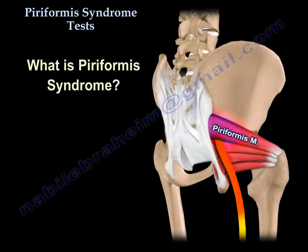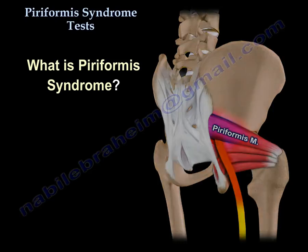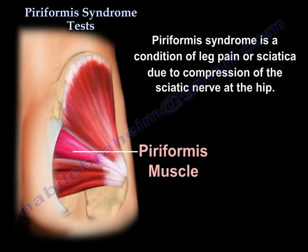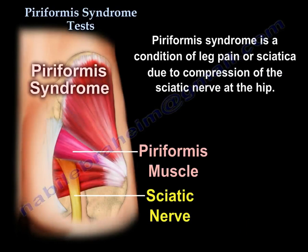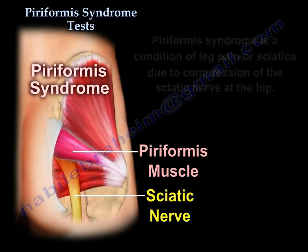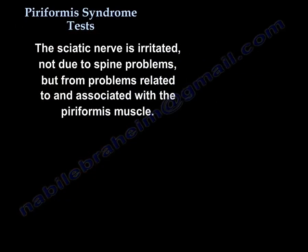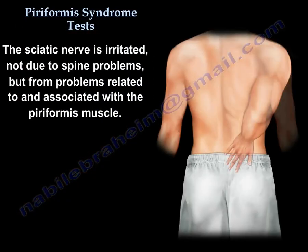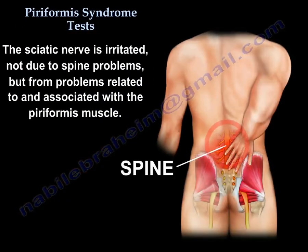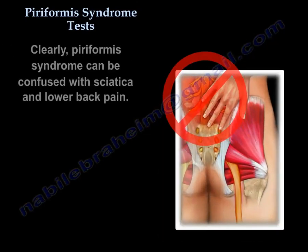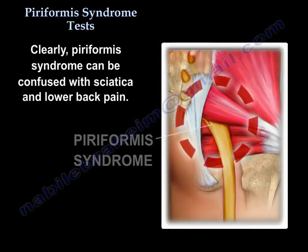So what is piriformis syndrome? It is a condition of leg pain or sciatica due to compression of the sciatic nerve at the hip. The sciatic nerve is irritated not from a spine problem but from problems related to and associated with the piriformis muscle. Piriformis syndrome can be confused with sciatica and lower back pain.